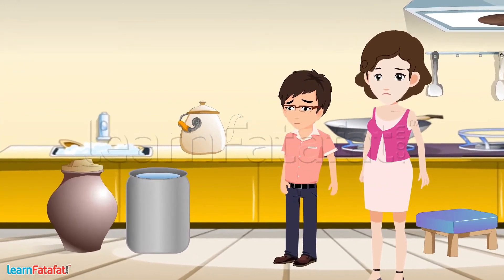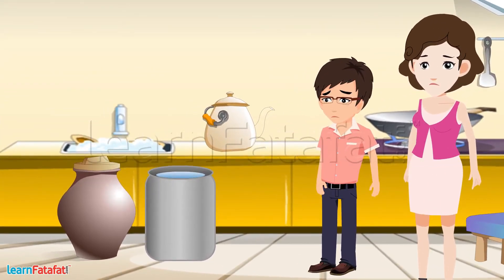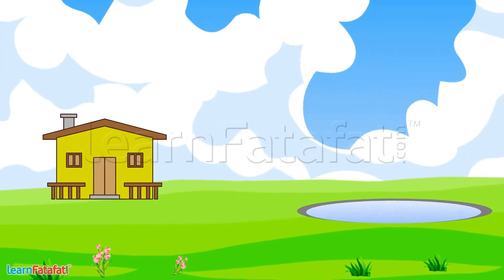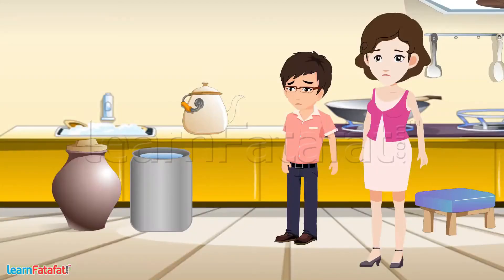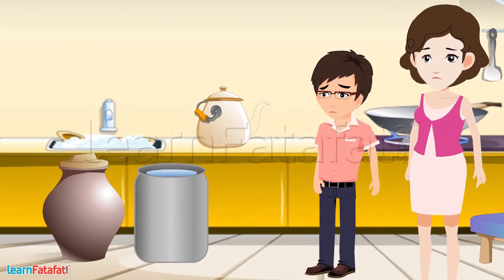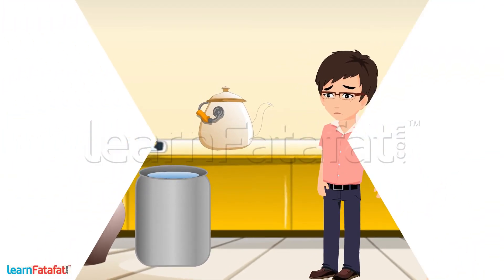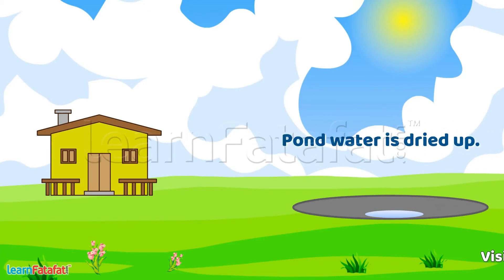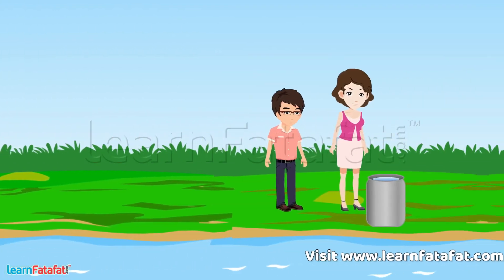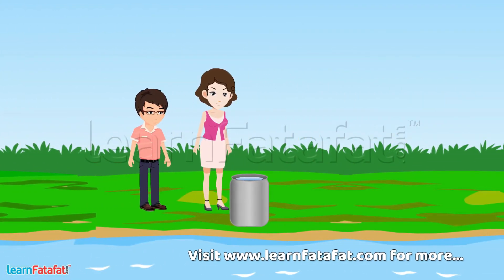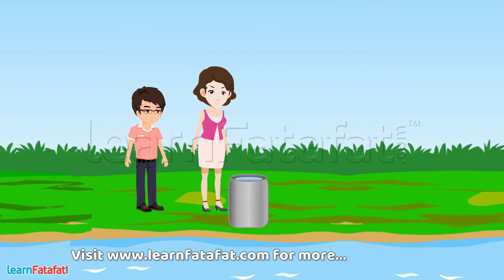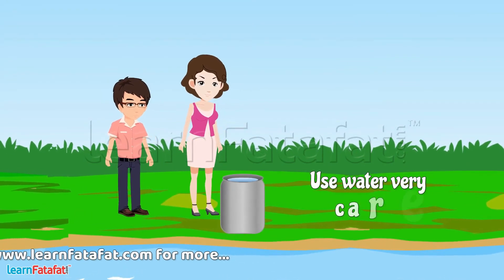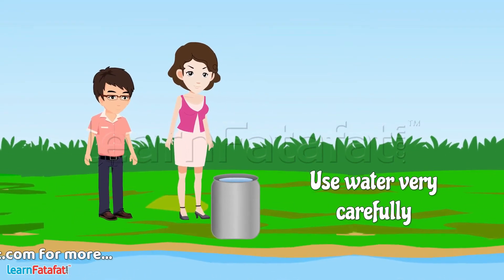Now let's go to Ishan's house. He gets water from the pond that is near to his home. Ishan and his mother fill the pond's water in different vessels. In summer, sometimes the pond water dries up. That's why Ishan and his mother have to walk almost one hour to the river to get water. That's why they use water very carefully and do not waste it.